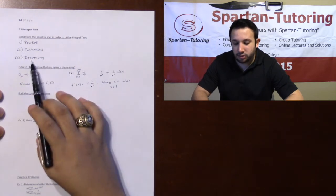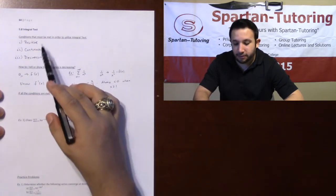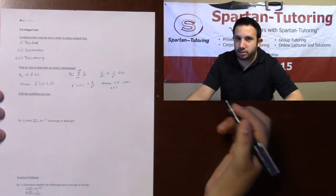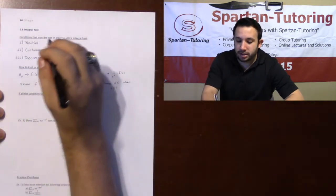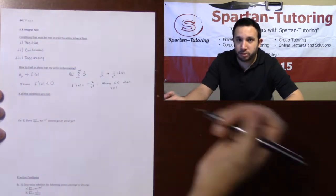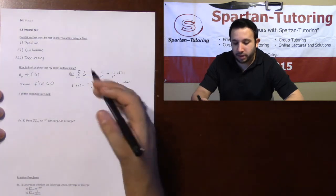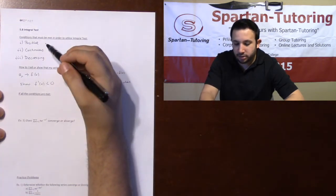If all three of these hold, you're good to go. Now, a lot of professors I've seen in the past just say positive, continuous, decreasing, put checkmarks by it, and you're done. But sometimes I want you to show that it's positive, continuous, and decreasing. Showing the first two is pretty easy, but sometimes decreasing can get a little tricky.